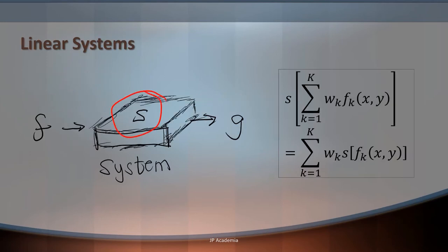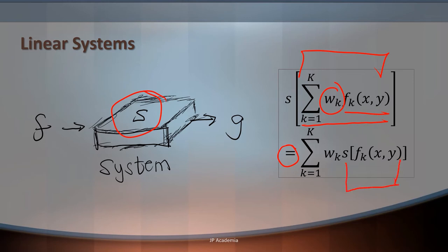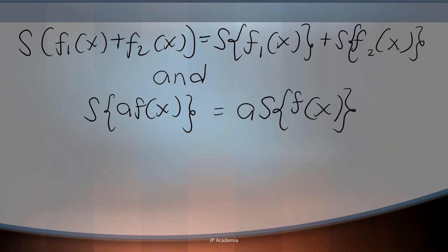A system is a linear system if when the input consists of a weighted summation of several signals, we have the weight times each input signal. Then, we will have an output that is a weighted summation of the responses of the system to each individual input signal. So, this is a weighted summation of the output for each individual input. A linear system means the output must be proportional to the input.